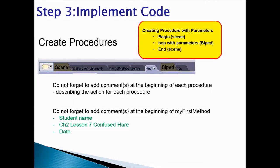Step three, implement code. You will create three procedures: begin, hop with parameters, and end. When you create your procedures, you would create two scene procedures, begin and end, and then you would create another biped procedure that would be hop. Now, your hop procedure would have parameters. You're making your hop to turn to a certain direction. You're making hop to go a certain height, how high to go. And if you want, you could also have your hop to say how far to go.